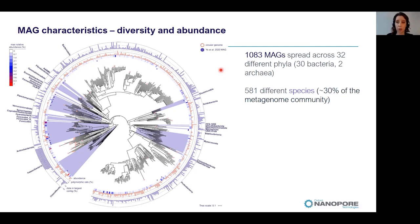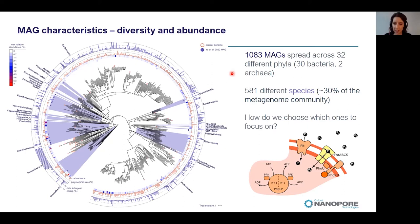Overall, we recovered 1,083 MAGs spread across 32 different phyla — 30 bacteria and 2 archaea — representing about 581 different species and covering 30% of the metagenome community on average. To decide where to focus, we looked at genes for polyphosphate accumulation within the genomes and picked a particular lineage that was quite high in abundance across many samples.